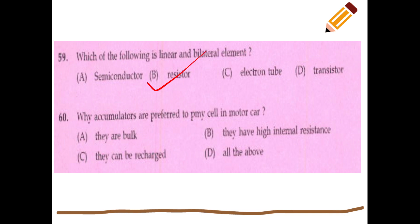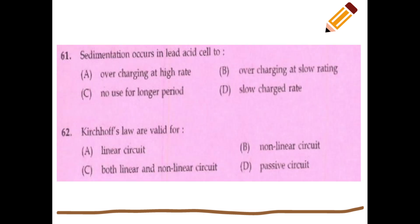Why are accumulators preferred over primary cells in motor cars? Because accumulators use a reversible (rechargeable) storage battery. Sedimentation occurs in lead-acid cells.